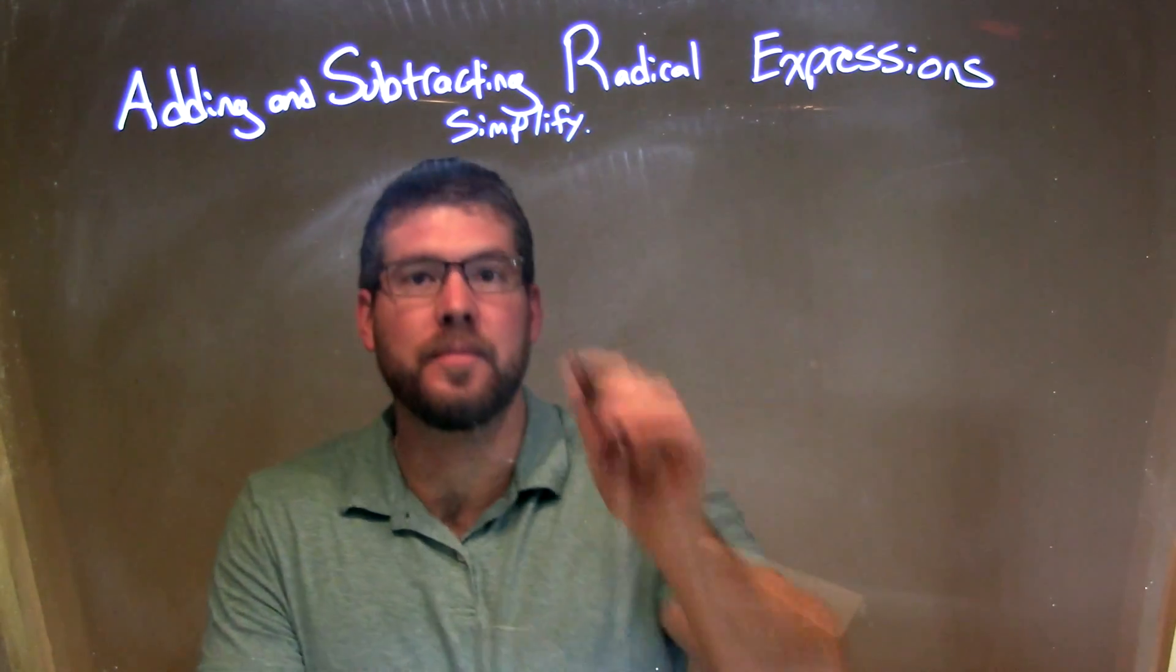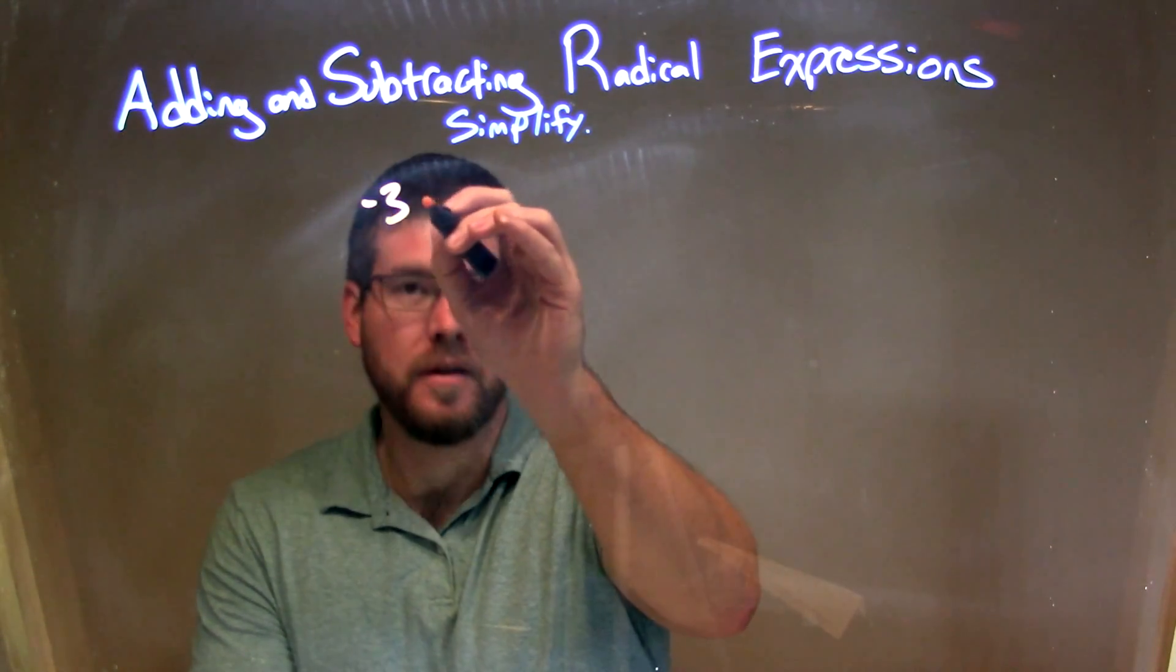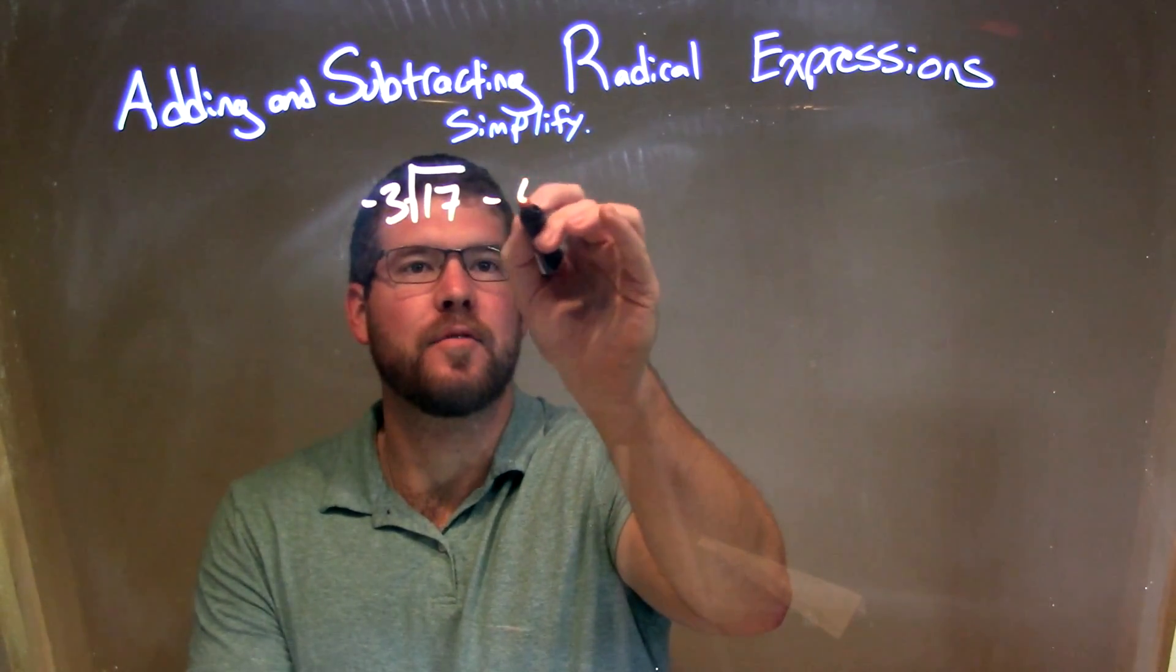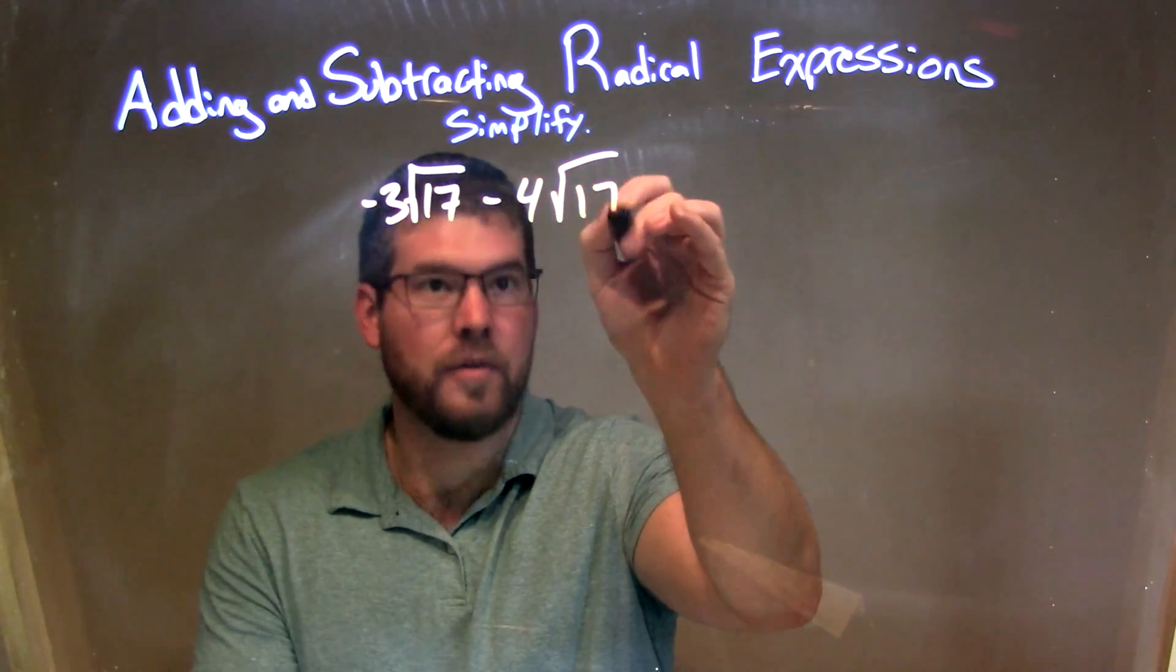So if I was given this expression: negative 3 times the square root of 17, minus 4 times the square root of 17.